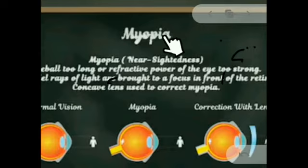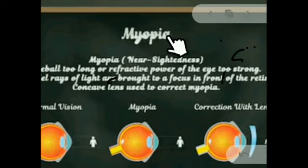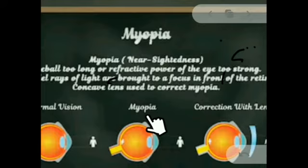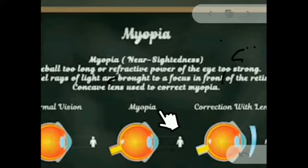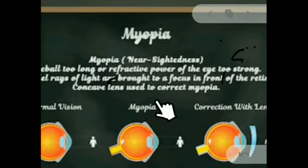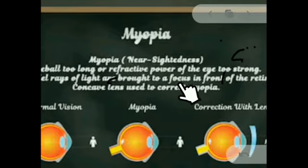The cause of myopia or nearsightedness is elongation of the eyeball. Another reason is that the converging power of the eye lens increases, meaning the focal length of the eye lens decreases and the lens becomes more thick. This is the reason for myopia.